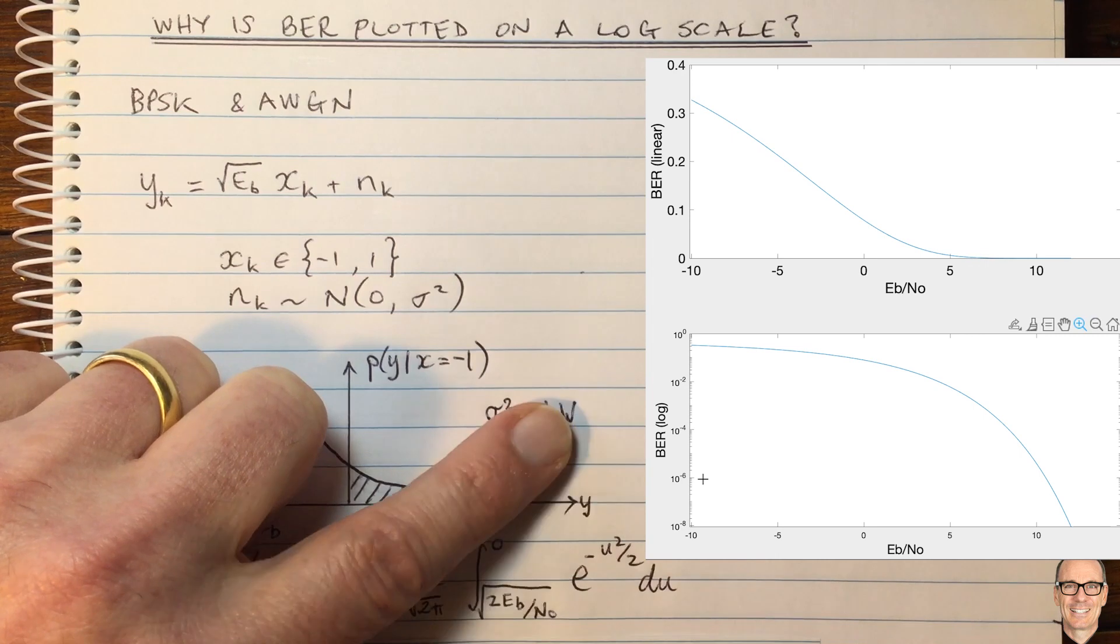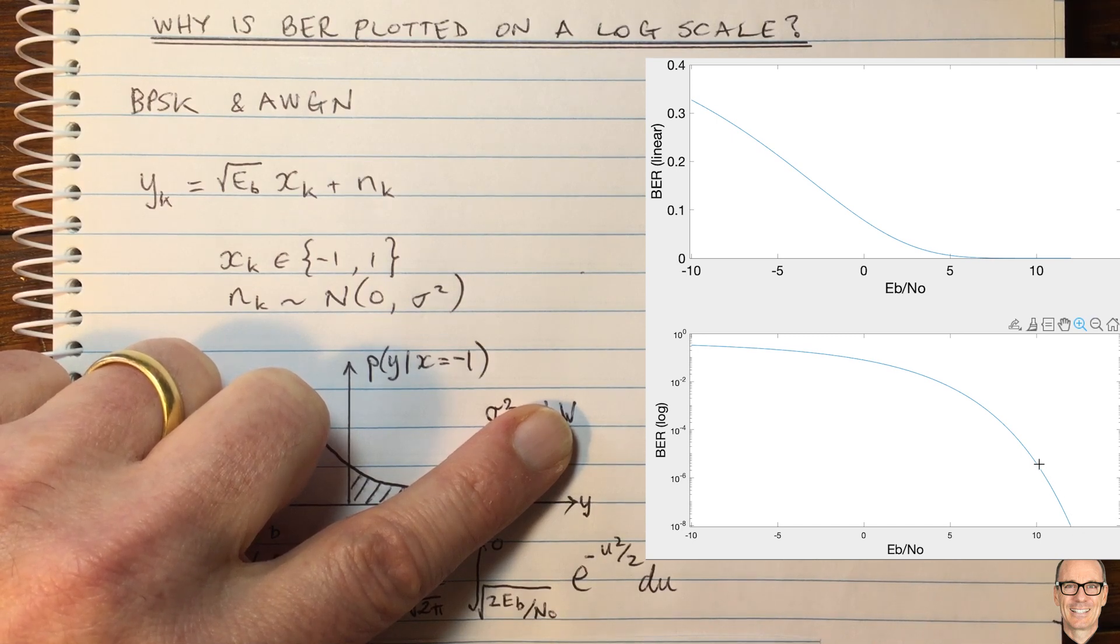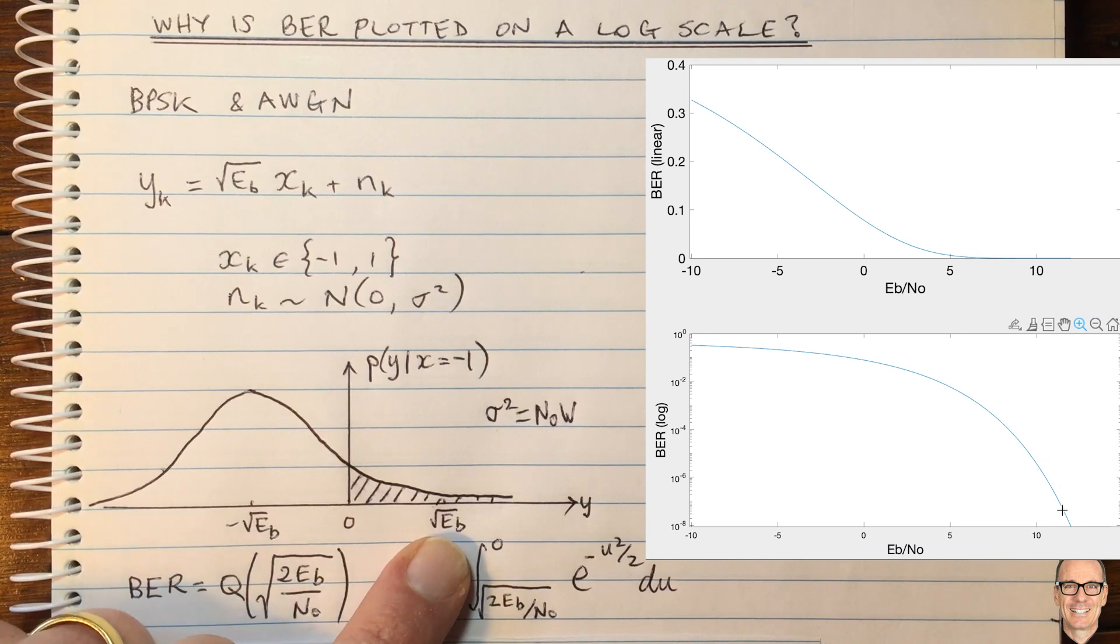And so this is really the reason that we want to look at the plot on a log scale. Another reason is that in the high SNR region, the slope of this can be shown to be linear when you plot it on a log scale. And so evaluating that slope shows you the advantage that you get from putting extra signal power into your signal. It shows you the extra gain you're going to get in terms of bit error rate because it's a linear function in a log scale.